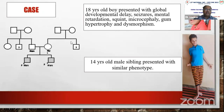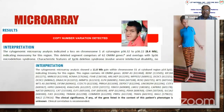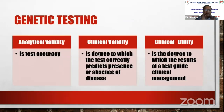A challenging case: two children with global developmental delay and facial dysmorphism — I suspected a chromosomal or exome-level problem. Surprisingly, microarray showed one child had a 1p36 deletion and the other had a duplication — completely different chromosomal abnormalities. Both parents were absolutely normal. This illustrates that identical clinical phenotypes in siblings can have entirely different genetic causes, detectable only by microarray.